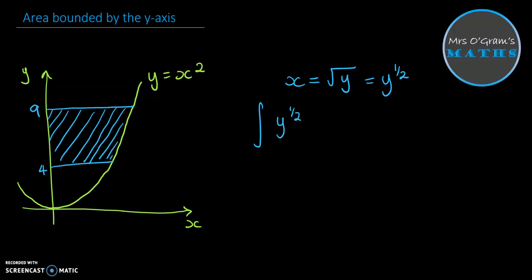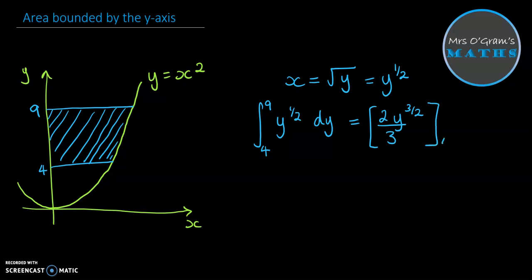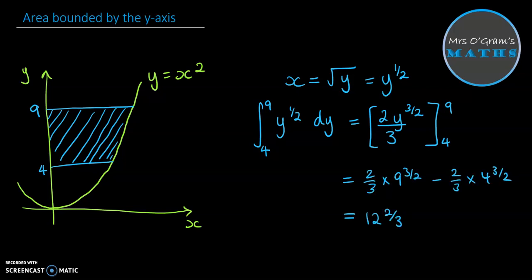We want the function in terms of y rather than x, and we are integrating with respect to y between the y values of 4 and 9. Integrating y to the half gives us y to the power of 3 over 2, divided by 3 over 2 — which is 2 thirds — evaluated between 4 and 9. We can then evaluate that, and for this one we get the answer of 12 and 2 thirds.